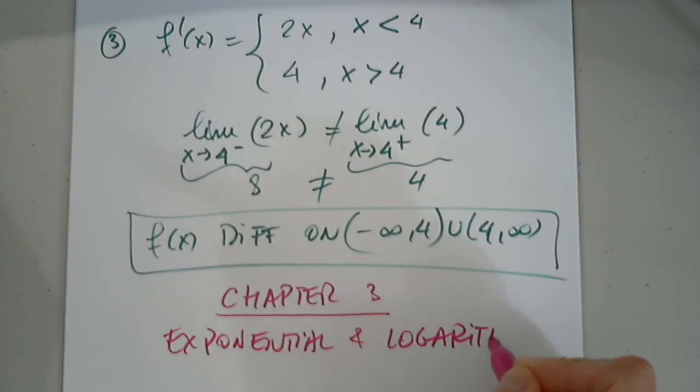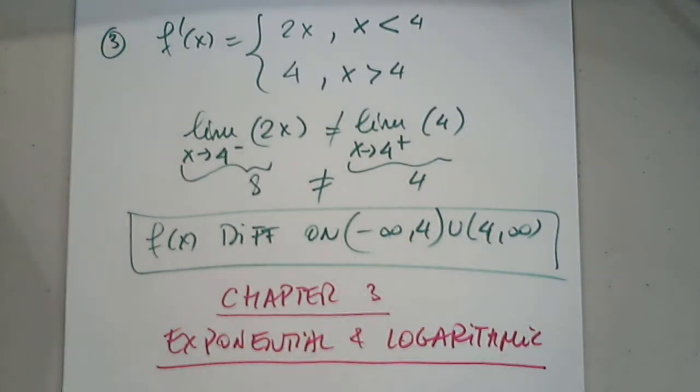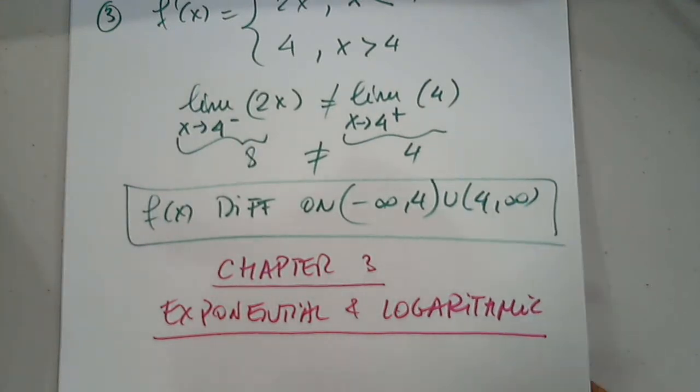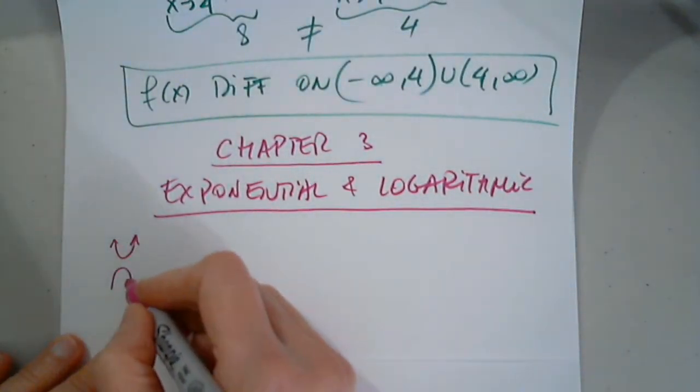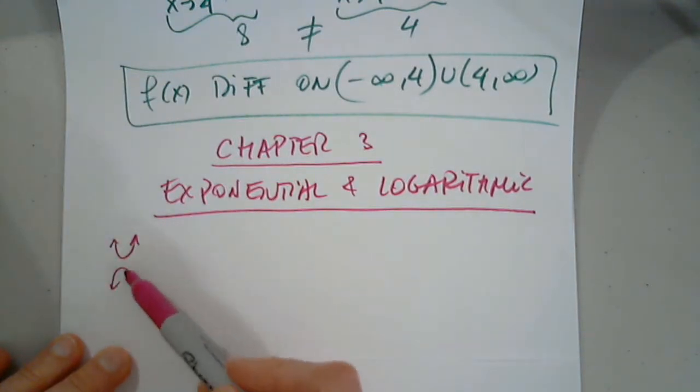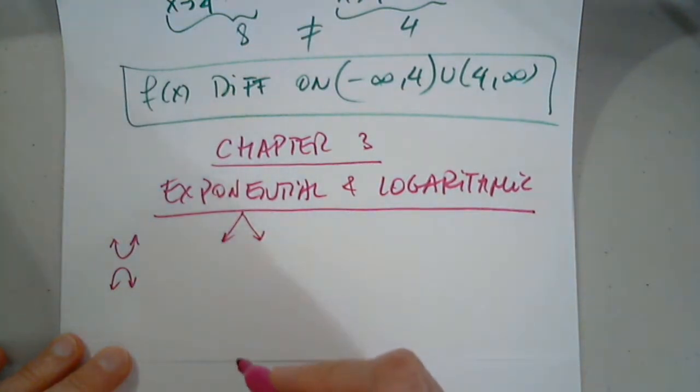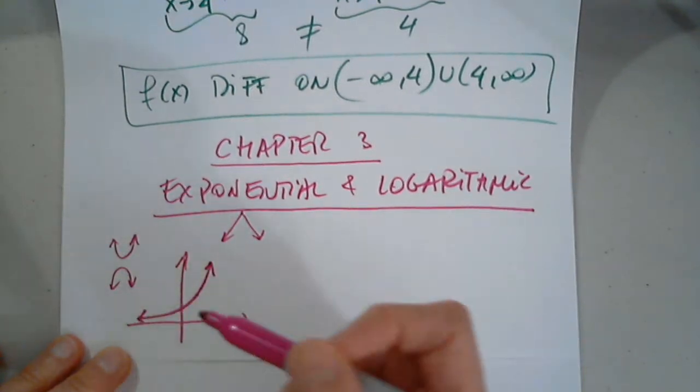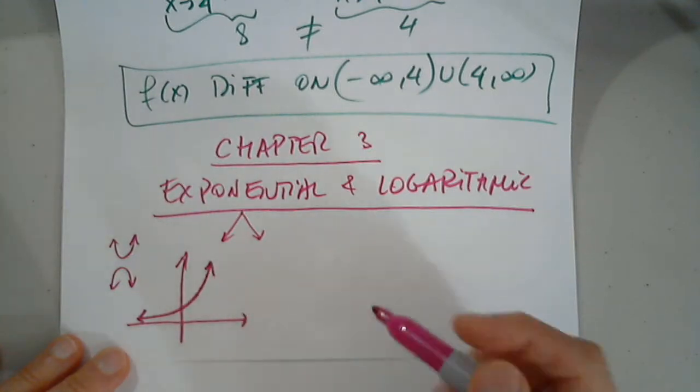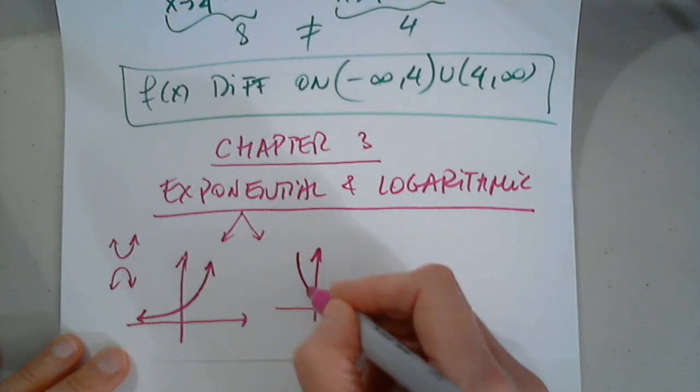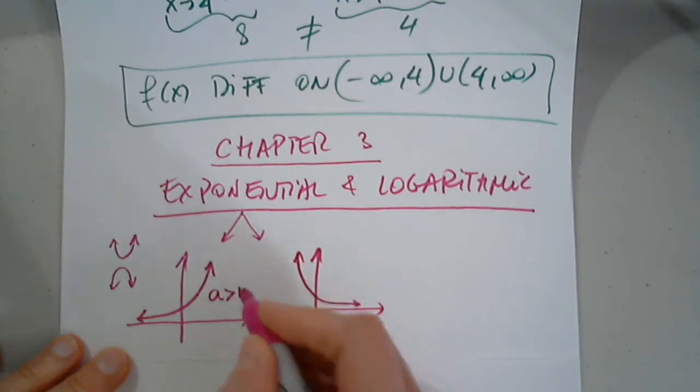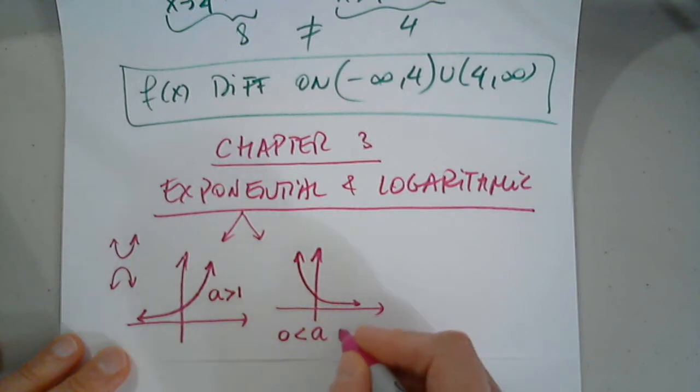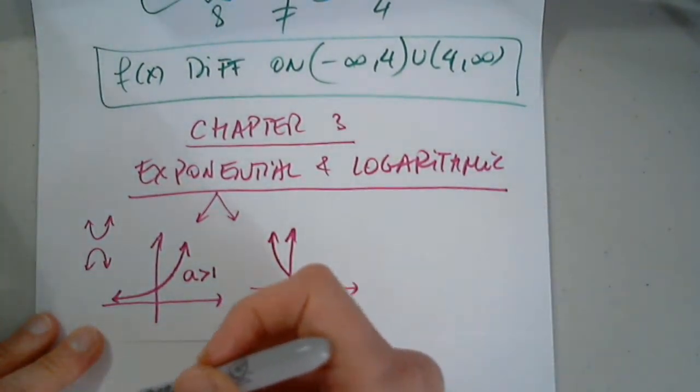We're covering exponential and logarithmic functions, reviewing the graphs first. We have two shapes for each, like we have two shapes for the quadratic function - either opening up or opening down. Same thing here: we have two possibilities for the exponential, which could be an increasing function on all its domain, and the second one which is decreasing on all its domain. This one has the base that is greater than one, and this one has the base that is between zero and one.